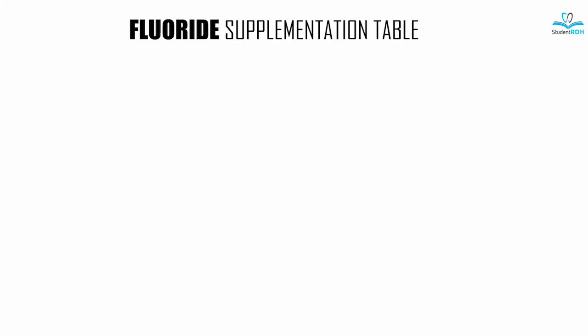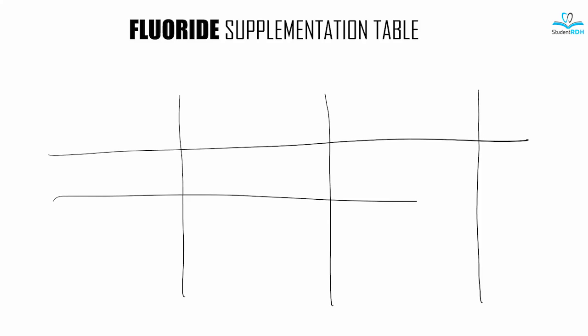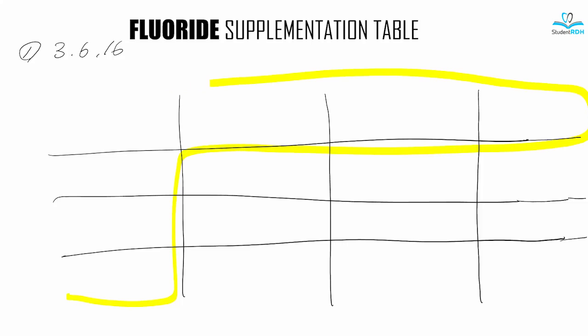This is how I memorized it and I hope this helps other students memorize this table. First, draw three lines vertically and three lines horizontally. Now let's memorize some numbers — these are very basic numbers. We're going to use 3, 6, and 16 in order to fill the outside of the table in this area.